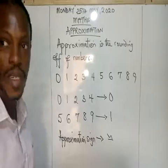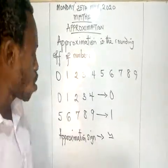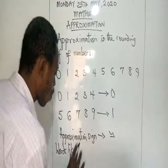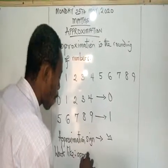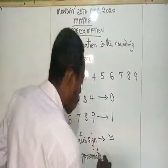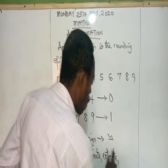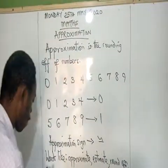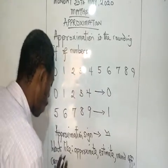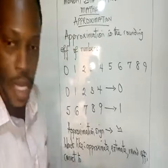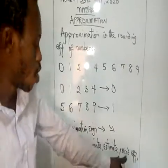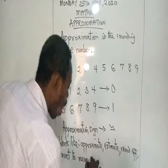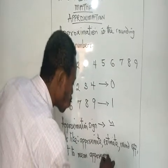We can equally use the word estimate to represent approximation. So these words — approximate, estimate, round off, correct to — they all mean approximation, you understand?